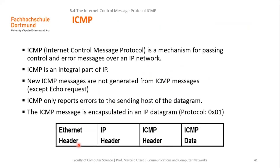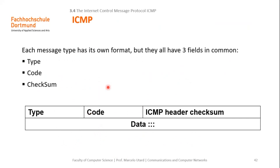This is typically the encapsulation of the ICMP message. The ICMP PDU has a header and data, and the ICMP message is encapsulated into the IP datagram, which is typically encapsulated into the Ethernet frame. In the header of the ICMP message, all different ICMP message types share three fields in common: the type, the code, and the checksum.